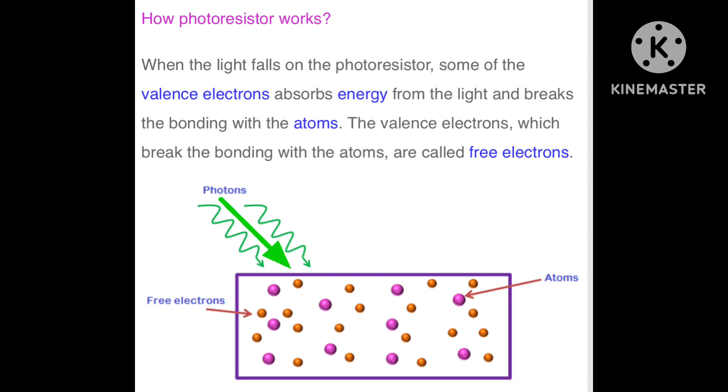Let's see how LDR works. When the light falls on the photoresistor, some of the valence electrons absorb energy from the light and break the bonding with the atom. The valence electrons which break the bonding with atoms are called free electrons.